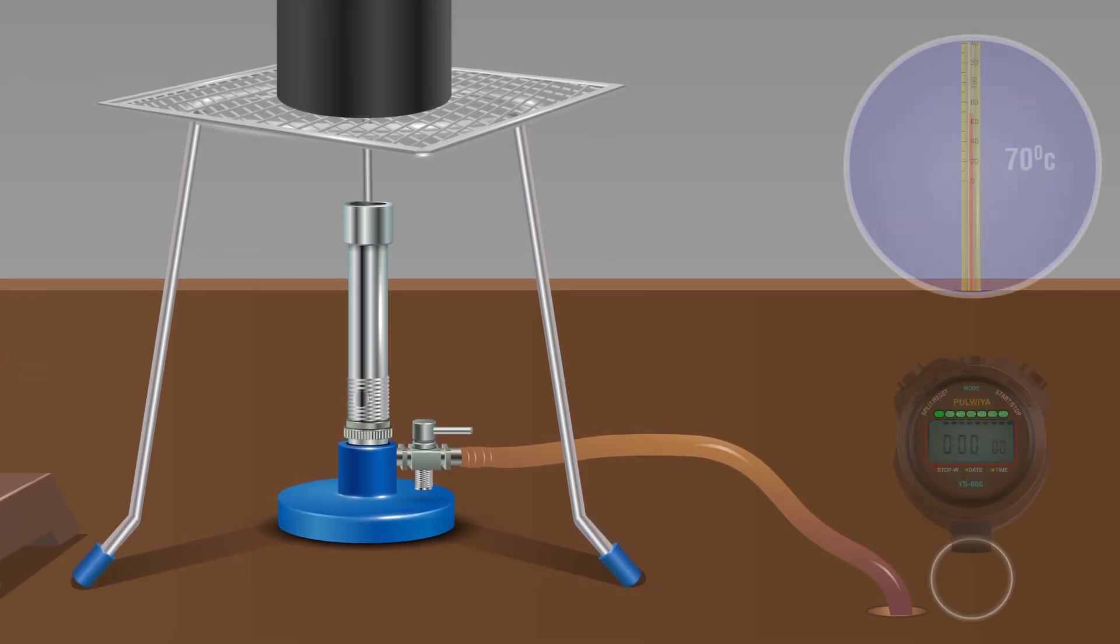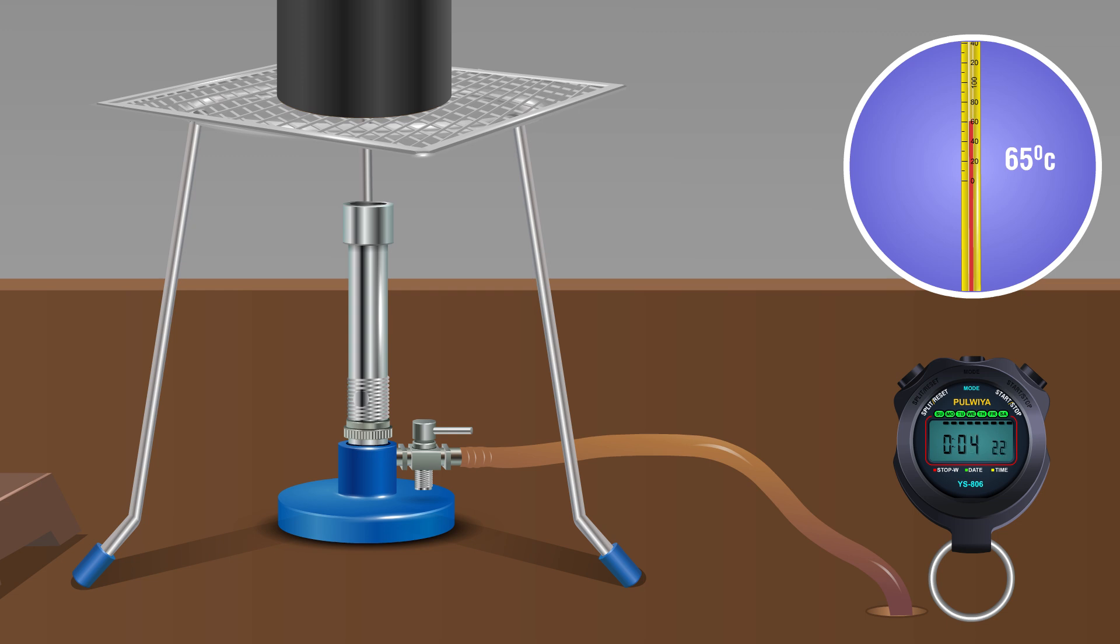Switch on the stopwatch. Note down thermometer reading in each minute until it reaches 10 degrees Celsius above the room temperature.